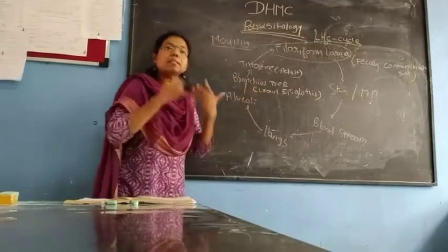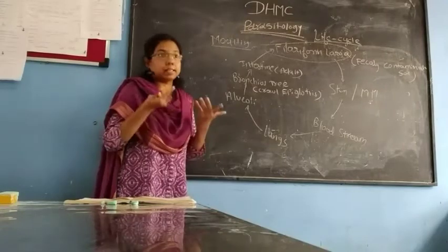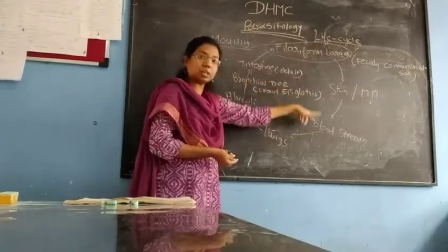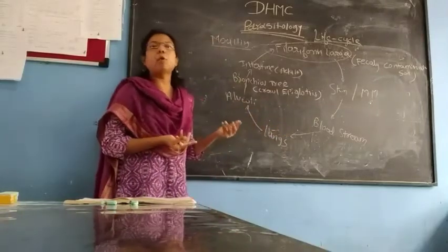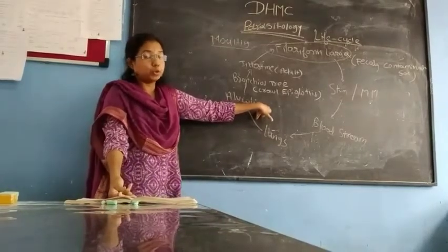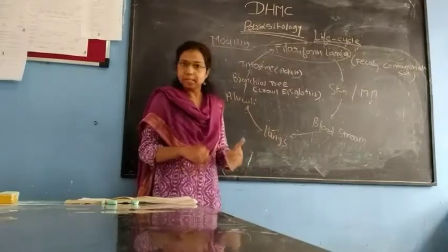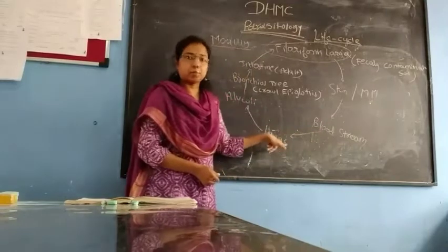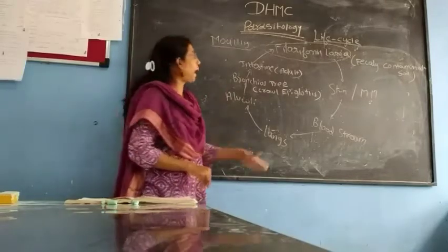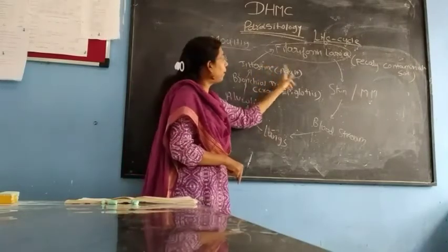When the larva reaches the bronchial tree, it ascends. Because this larva has active motility, it crawls up to the epiglottis and gets swallowed back. The journey is: bloodstream → lungs → alveoli → bronchial tree, then it ascends, crawls at the epiglottis, and gets swallowed back to the intestine. The filariform larva then develops into the adult — both male and female.